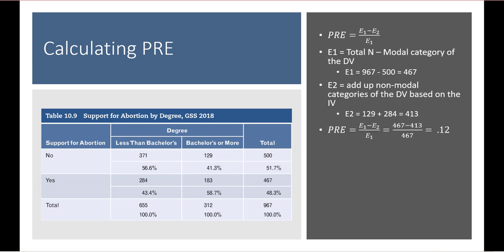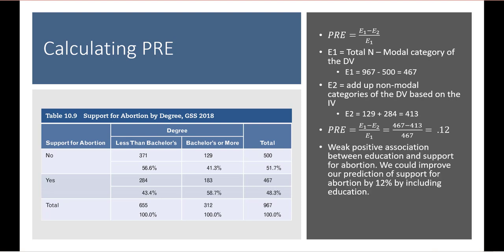Plugging in: (467 − 413) / 467 = 0.12. This shows a weak but positive association between education and support for abortion. We can say that having a bachelor's degree or more is associated with greater likelihood of supporting abortion, and that including education as a predictor improves our prediction by about 12%.